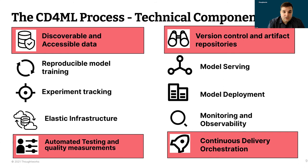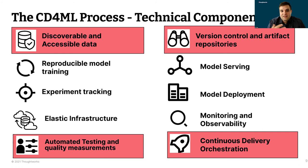Version control and artifact repositories are also important. Just like we version our code, we want to version our machine learning models and our data. Reproducibility is key — if someone asks why the model predicted something a certain way and you don't have the model or data to go back to, it will be very hard to do root cause analysis or debugging. Version controlling your code, model, and data is important to CD4ML.